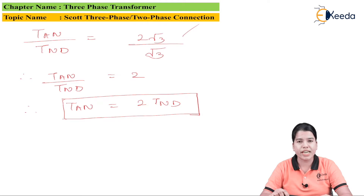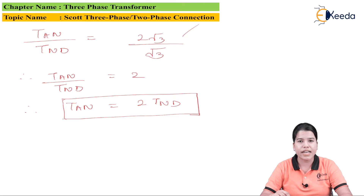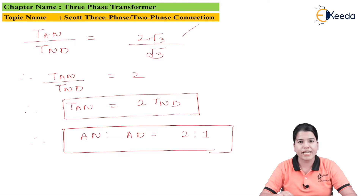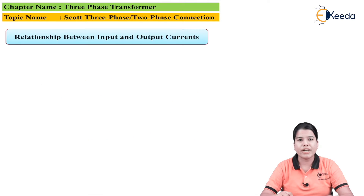From this equation, we can say that if we want the voltage constant in the turns, then N must be positioned at the two-thirds point of the total winding. Point N divides the winding of the teaser transformer in the ratio 2:1. Hence, AN is to ND is equal to 2 is to 1.